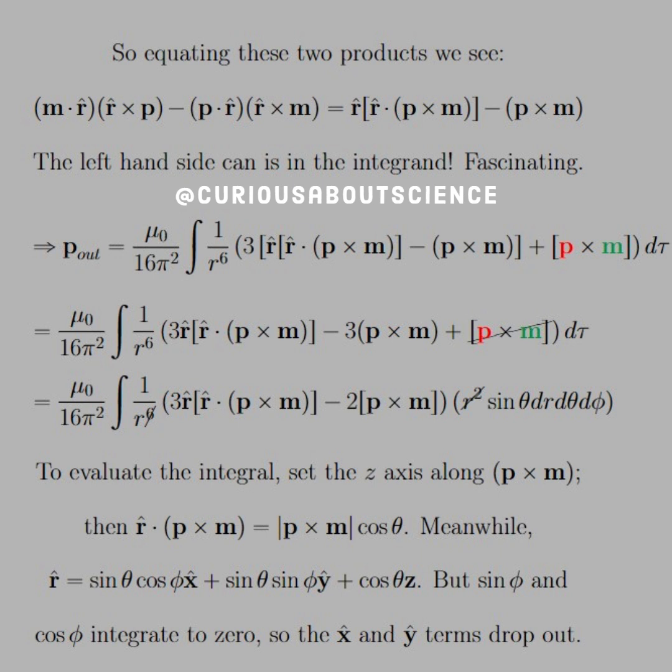And so, from these, we can equate the two products, again, the triple product on the left. And if we do that, we get the result from the first triple product and the result from the BAC-CAB method. And now we see that once we do this, the left-hand side can be substituted into the integrand, and we can simplify this. So, P out is equal to mu naught over 16 pi squared integral 1 over R to the 6th. If we substitute the right-hand side in from the left-hand side, this simplifies down. We have to distribute the 3. No big deal. We do that.